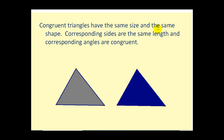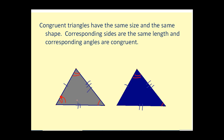Congruent triangles have the same size and the same shape. Therefore, the corresponding sides have the same length and the corresponding angles are congruent. So this side is the same length as this side, this side is the same length as this side, and this side is the same length as this side. The corresponding angles are also congruent, meaning this angle equals this angle, this angle equals this angle, and this angle equals this angle.